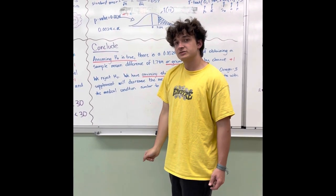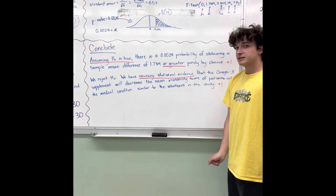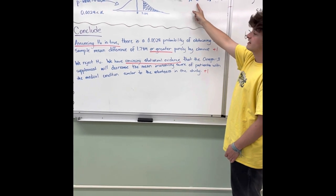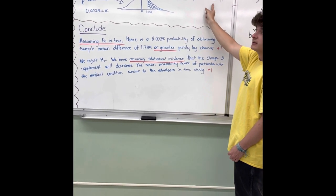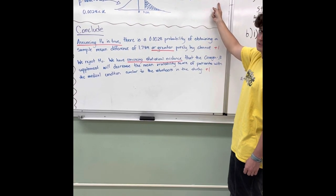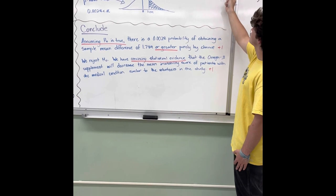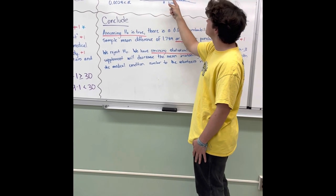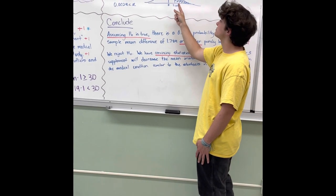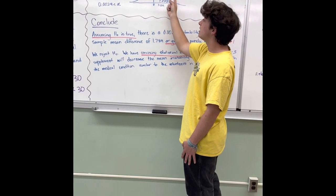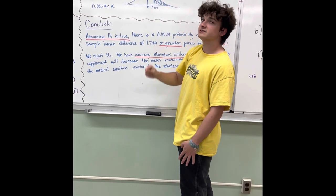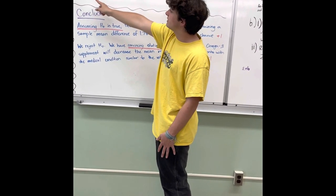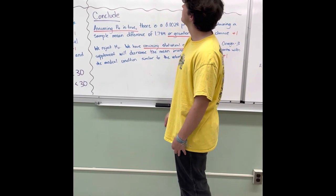Now we calculate the p-value using that test statistic. On the calculator, we run a t-test with mu-naught equal to 0, x-bar equal to 1.789, standard deviation equal to 2.485, n equal to 19, and mu greater than mu-naught. As shown on the graph, we've shaded the probability that the test statistic is greater than or equal to 3.139 on the t-distribution with 18 degrees of freedom. Our p-value is 0.0028, which is less than our alpha of 0.05.